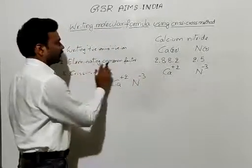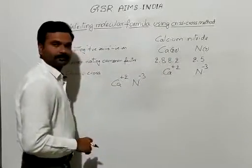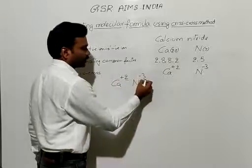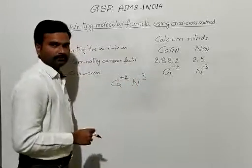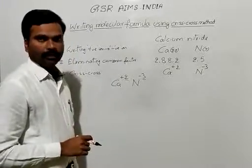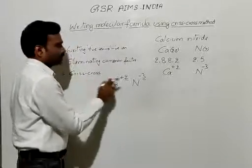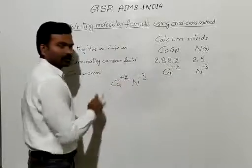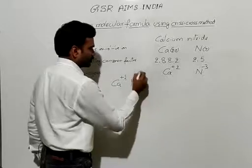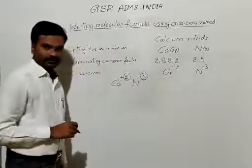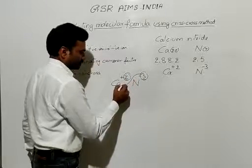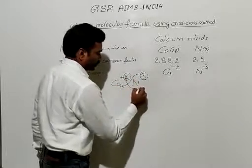Step two: eliminating the common factor from these charges. Calcium has a charge of 2 and nitrogen has a charge of minus 3. From these two, no common factor can be removed or eliminated. So we move to step three: criss-crossing the numbers remaining after step two. The number remaining for calcium is 3, and the number remaining for nitrogen is 2. Writing the symbols, we are going to criss-cross these numbers — the 3 will come here and the 2 will go there.